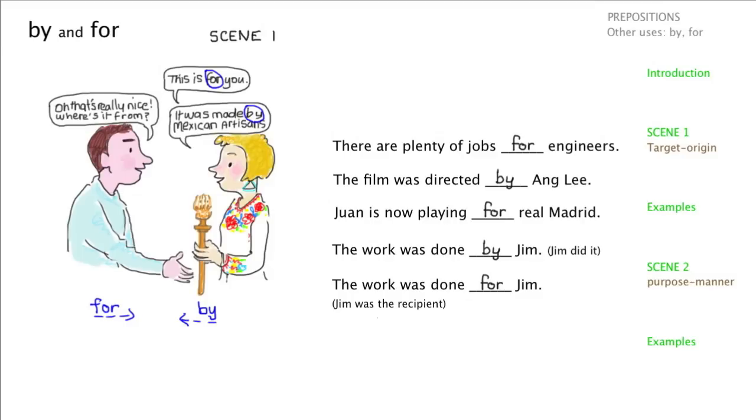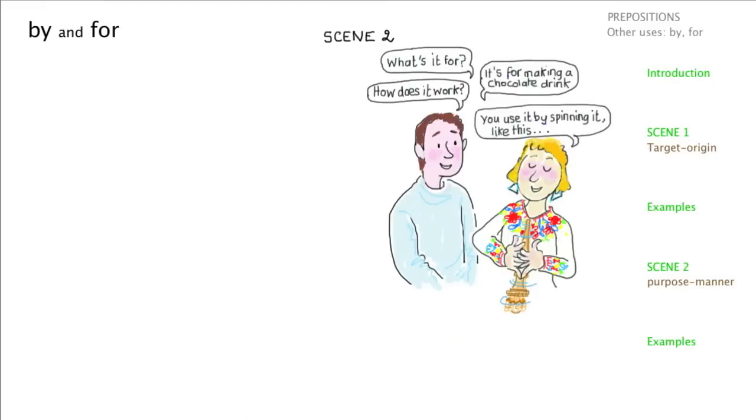Now we're moving on to scene two, where we use by and for again, but in rather different ways. And in scene two, the conversation continues, and he says what's it for? And she says it's for making a chocolate drink. And he says how does it work? And she says you use it by spinning it, like this.